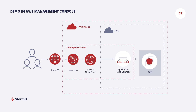Here is an infrastructure diagram of the services we will deploy. We will use a new feature in Application Load Balancer and everything will be encrypted with HTTPS. If this is something interesting to you, let's go to the AWS Management Console.